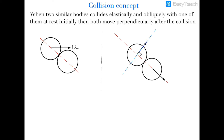In this video I'll be explaining the second important concept of collision. When two similar bodies — similar in shape, size, and mass — collide elastically and obliquely with each other, and one of them is initially at rest, they both move perpendicularly to each other after the collision. Here you can see a ball moving with some velocity u horizontally, colliding with another identical ball that is at rest.